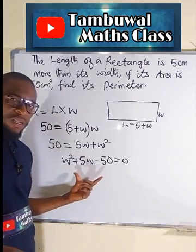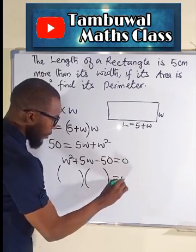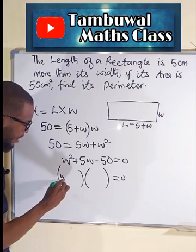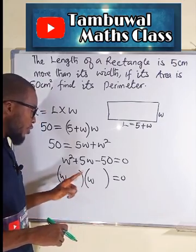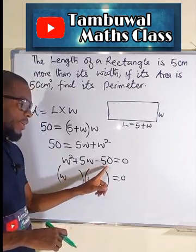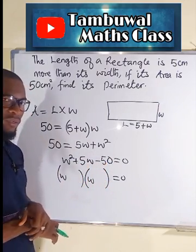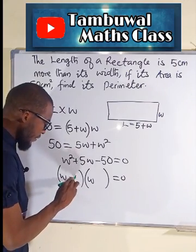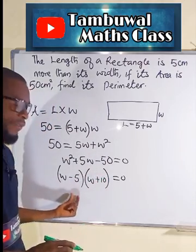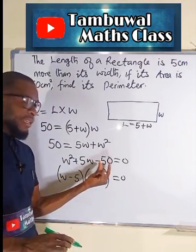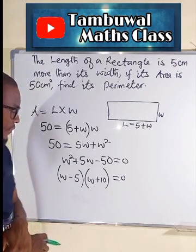We can solve this quadratic equation by factorization. We are going to think of two numbers: when we multiply them together we get negative 50, and when added together we get positive 5. The numbers are negative 5 and positive 10, because negative 5 times 10 is negative 50, and negative 5 plus 10 is equal to positive 5.